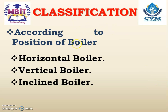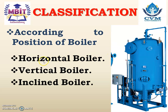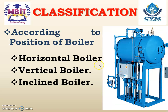Classification of boilers: According to the position of the boiler drum, a boiler can be horizontal, vertical, or inclined. If the large closed vessel (boiler drum) is positioned vertically, it is a vertical boiler; if placed horizontally, it is a horizontal boiler; and similarly it can be inclined.